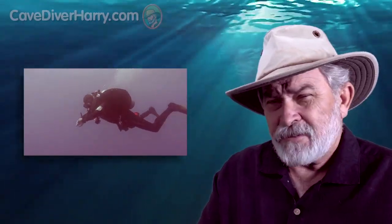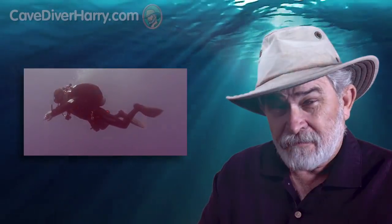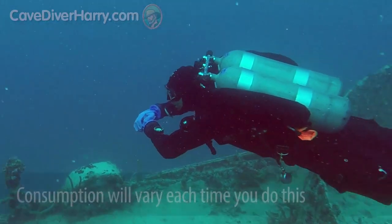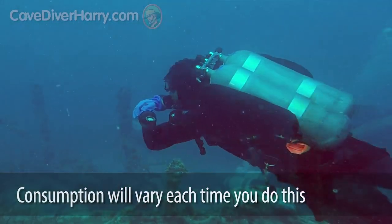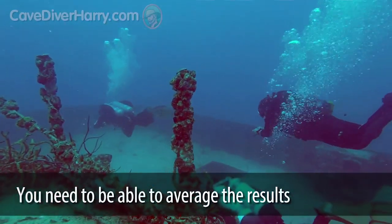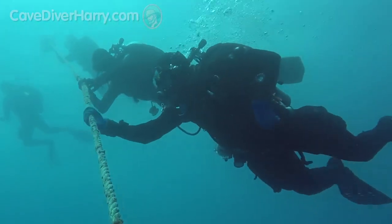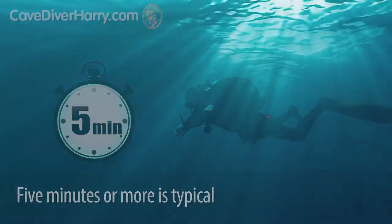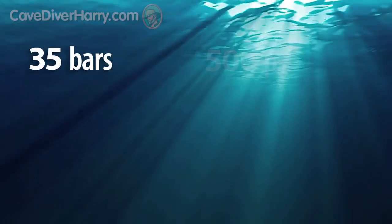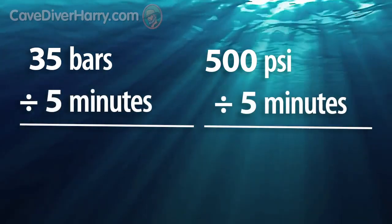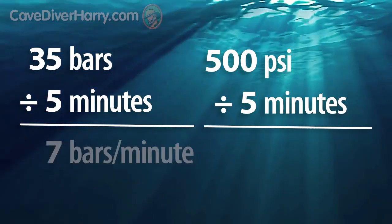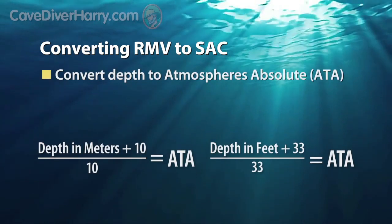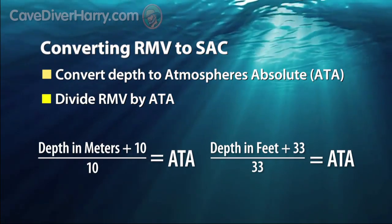Determining your personal SAC rate isn't difficult, but you will need to invest a little time doing it. Basically, you are going to need to do a number of gas consumption runs. The reason you do several is that your gas consumption will vary each time, and you need to average them to come up with a more accurate figure. A typical gas consumption run consists of swimming or resting at a constant depth for a fixed period of time — 5 minutes or more is common. If you use, say, 35 bars or 500 PSI over 5 minutes, your RMV at depth would be one-fifth of that: 7 bars or 100 PSI per minute. The next step is to convert RMV to an equivalent SAC rate by dividing it by the depth of your run in atmospheres absolute. So, if you did your gas consumption run at 10 meters or 33 feet, your SAC rate would be half of what it was at depth.